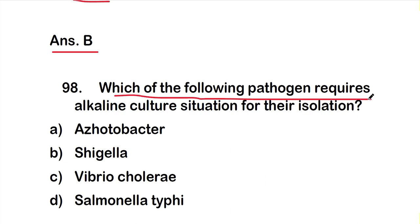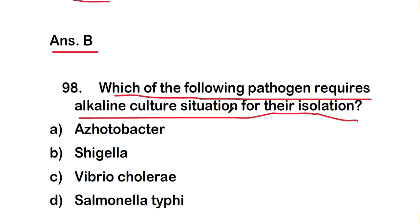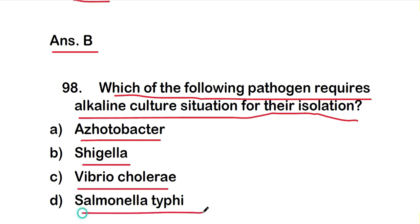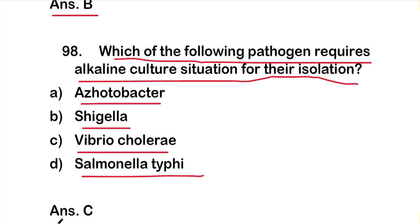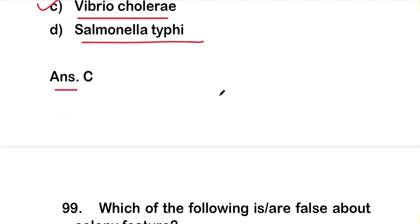Question number 98: Which of the following pathogens requires alkaline culture conditions for isolation? Option A: Acetobacter, option B: Shigella, option C: Vibrio cholerae, option D: Salmonella typhi. The right answer is option C — Vibrio cholerae requires alkaline culture pH for isolation.